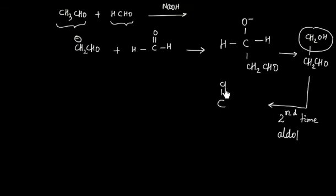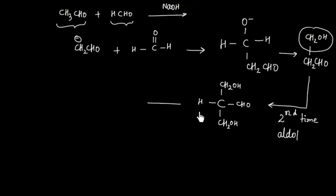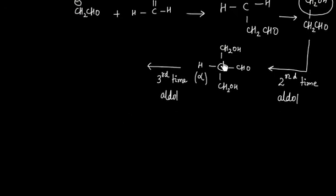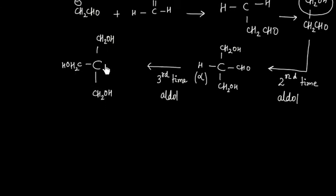After the second aldol reaction, we have C with CH₂OH on one side, CH₂OH on another side, CHO, and one hydrogen remaining. That remaining hydrogen is still an alpha hydrogen, so we can do a third aldol reaction. After the third aldol reaction, that hydrogen is also replaced by –CH₂OH, giving us C with CH₂OH, CH₂OH, CH₂OH, and CHO.